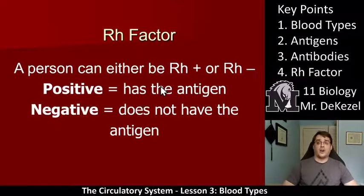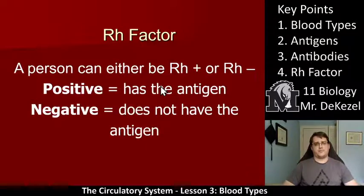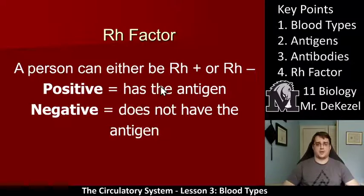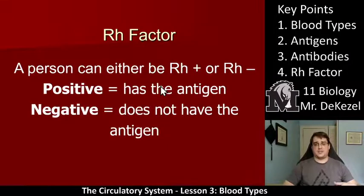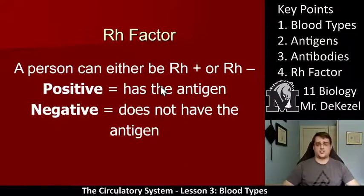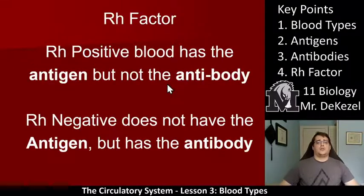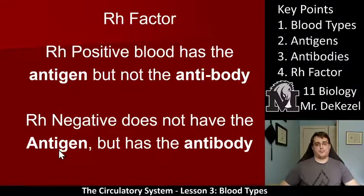We also have the RH factor, which is key point four. The RH factor splits all A, B, AB, and O types into positives and negatives. A person can either be RH positive or RH negative, and these denote whether the cell has the antigen or not. Positive does have the antigen and negative does not have the antigen — it's just called the RH antigen. So RH positive blood has the antigen but not the antibody, and RH negative does not have the antigen but it has the antibody.